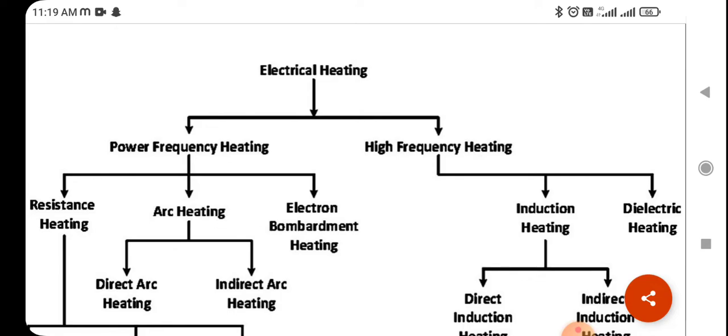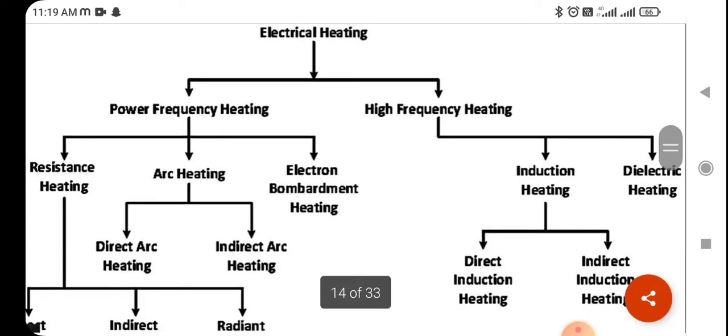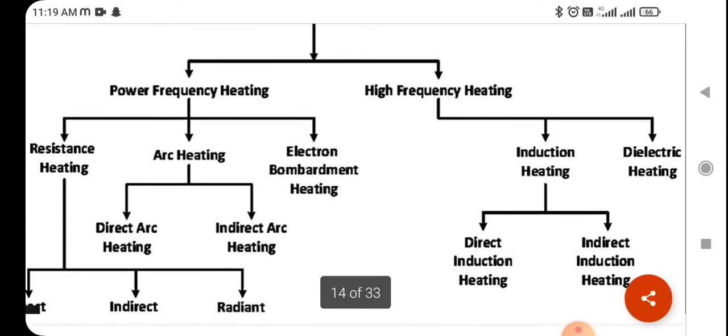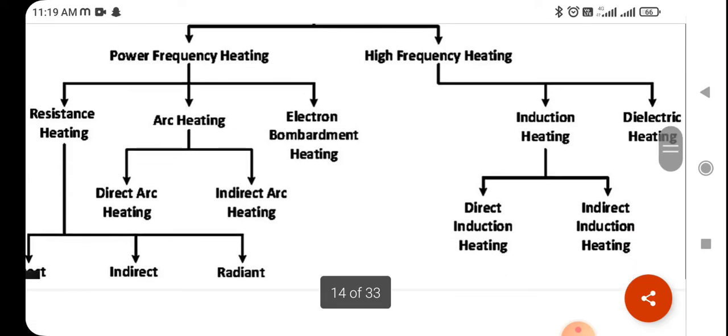Power frequency heating is divided in three parts: resistance heating, arc heating, and electron bombardment method. Arc heating is again two types: direct arc heating, indirect arc heating. And resistance heating has three types: direct, indirect, and radiant.